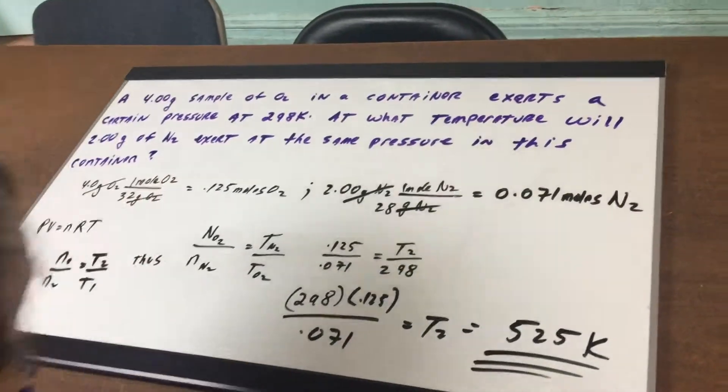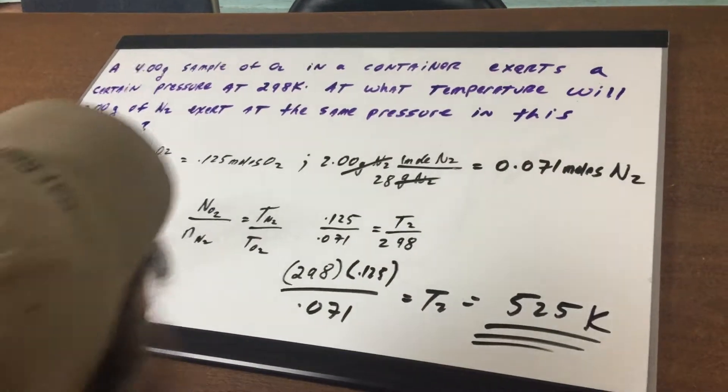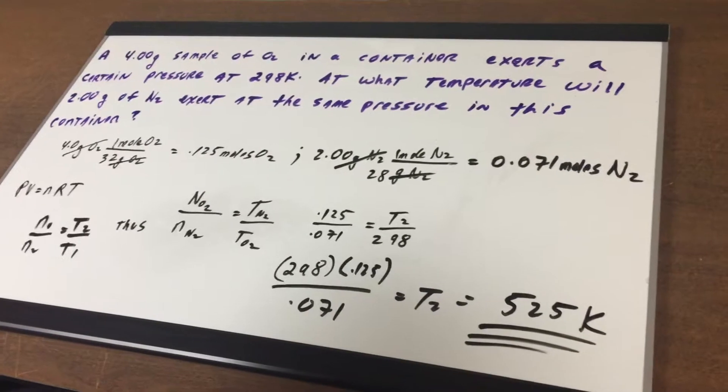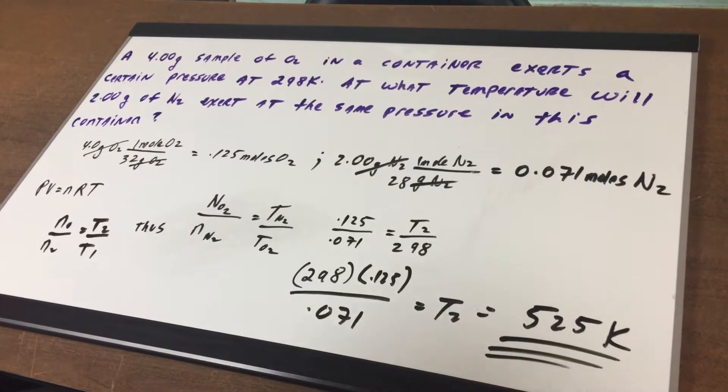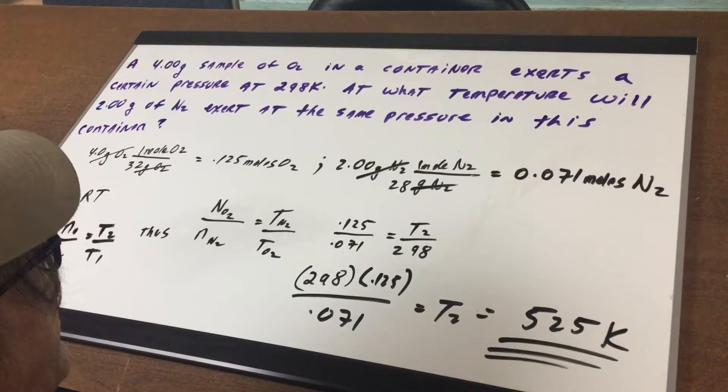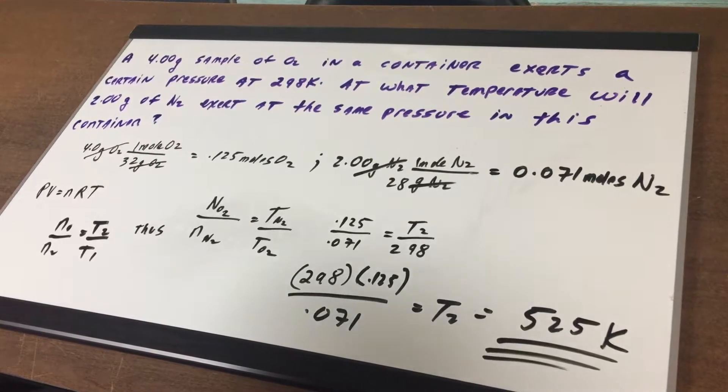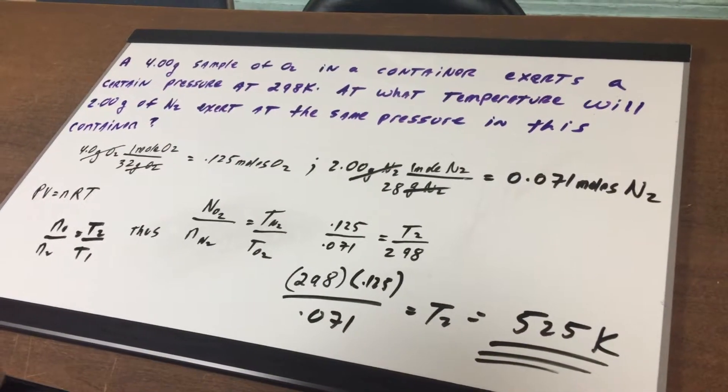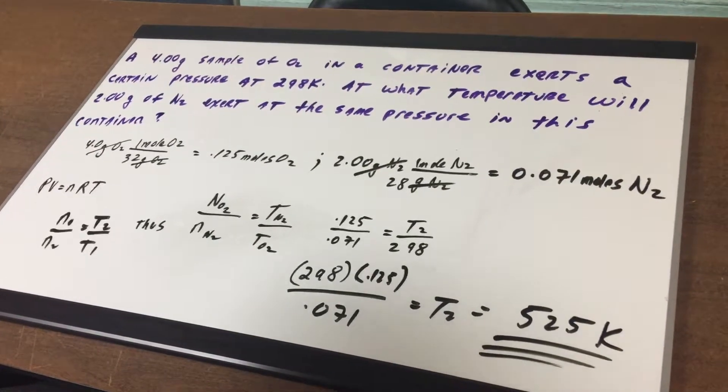In this problem, I'd say to you we have a four gram sample of oxygen in a container and it exerts a certain pressure at 298 Kelvin. At what temperature will two grams of nitrogen gas exert at the same pressure in this very container?